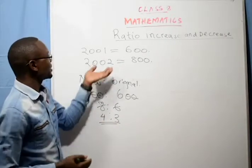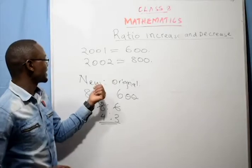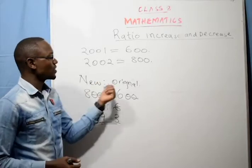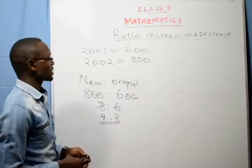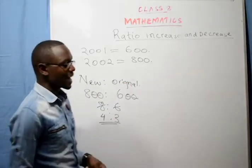To get the ratio increase, we simply express the new quantity over the original quantity.